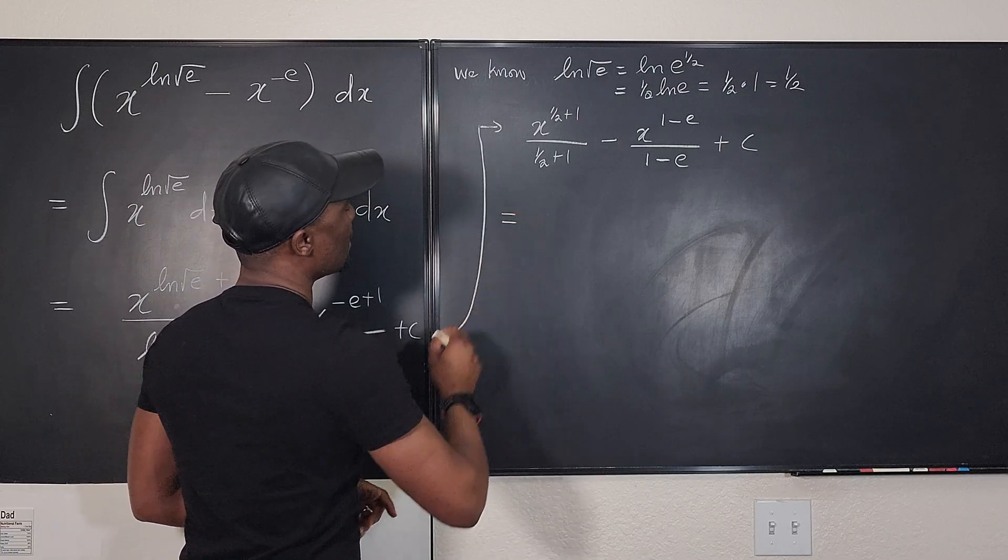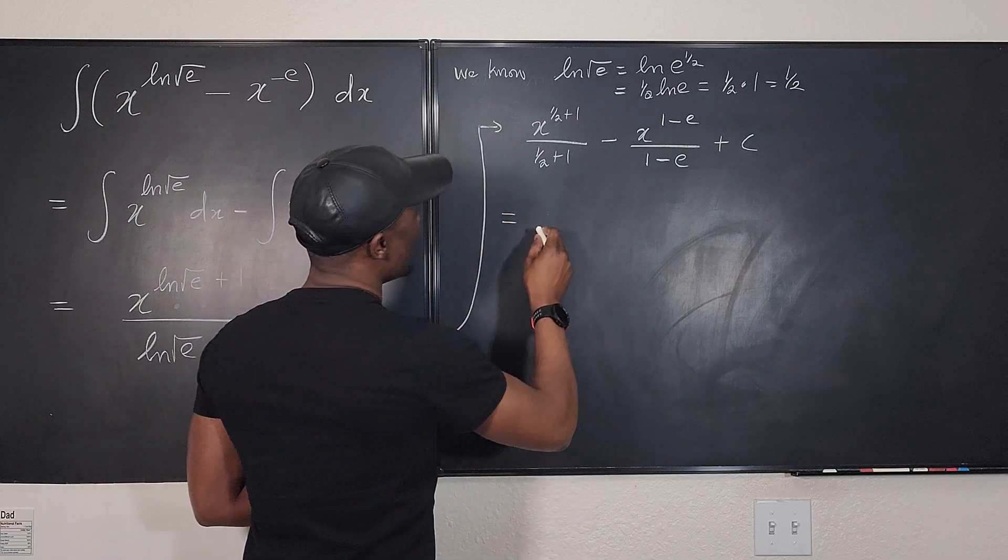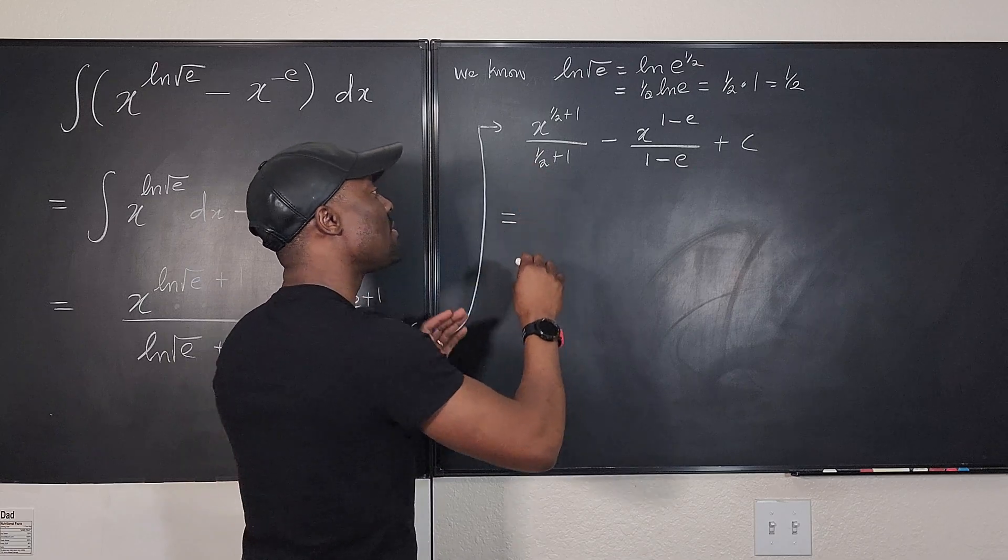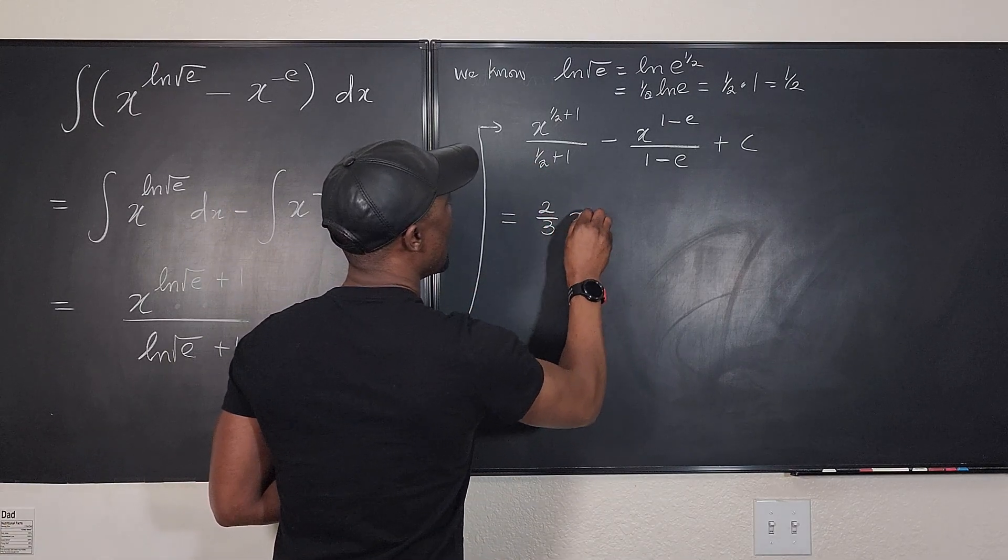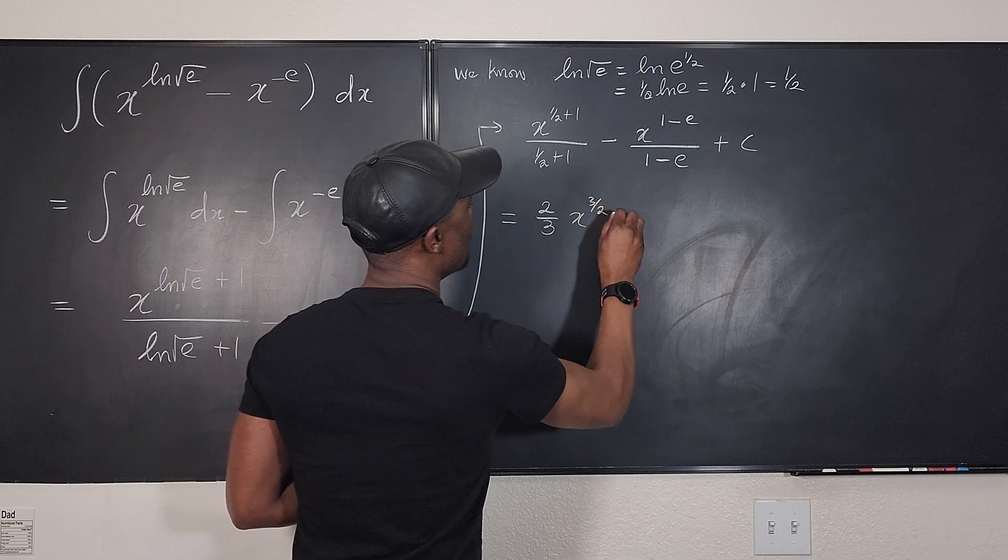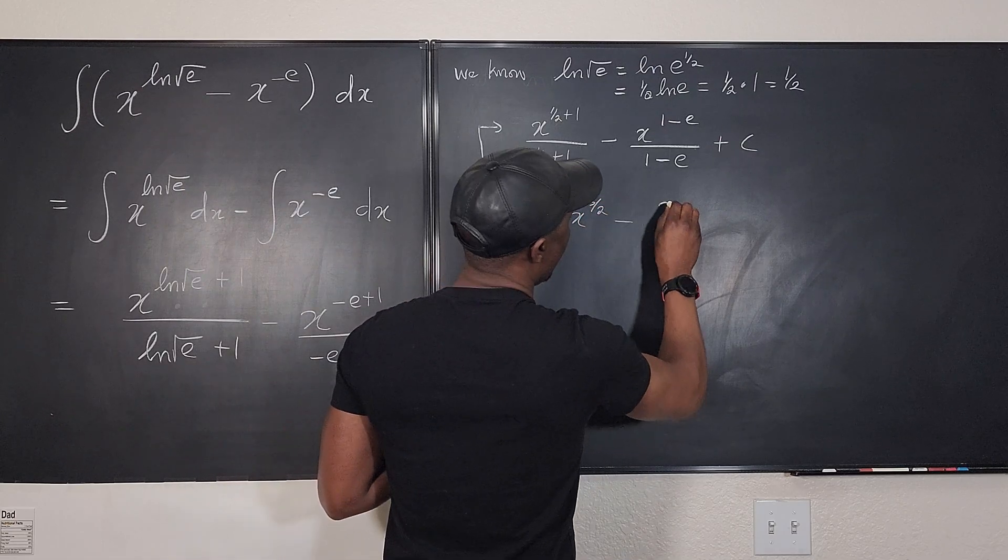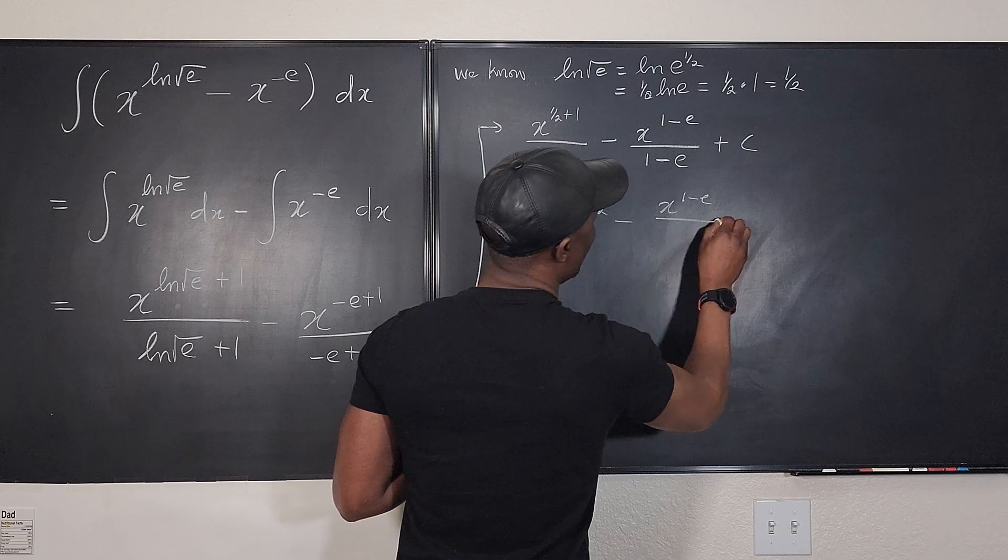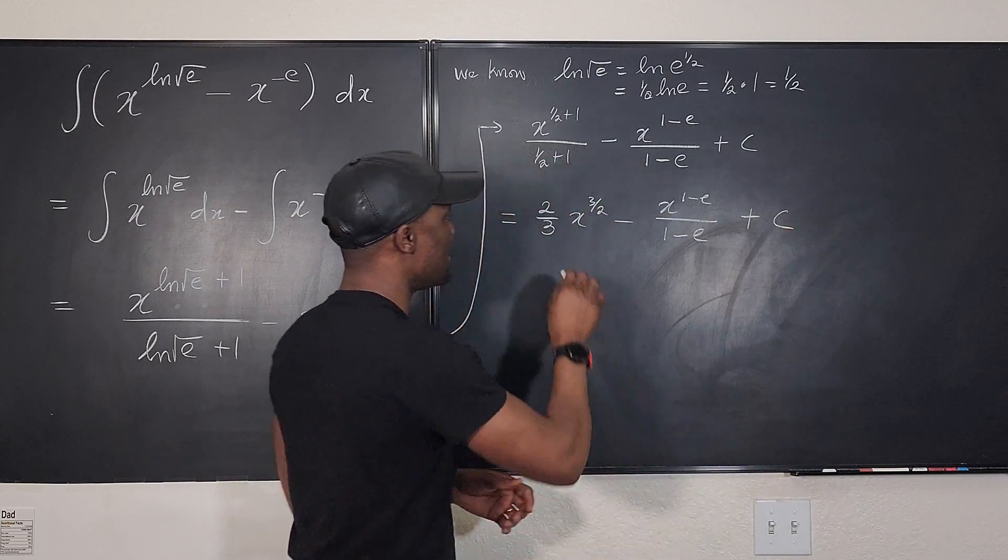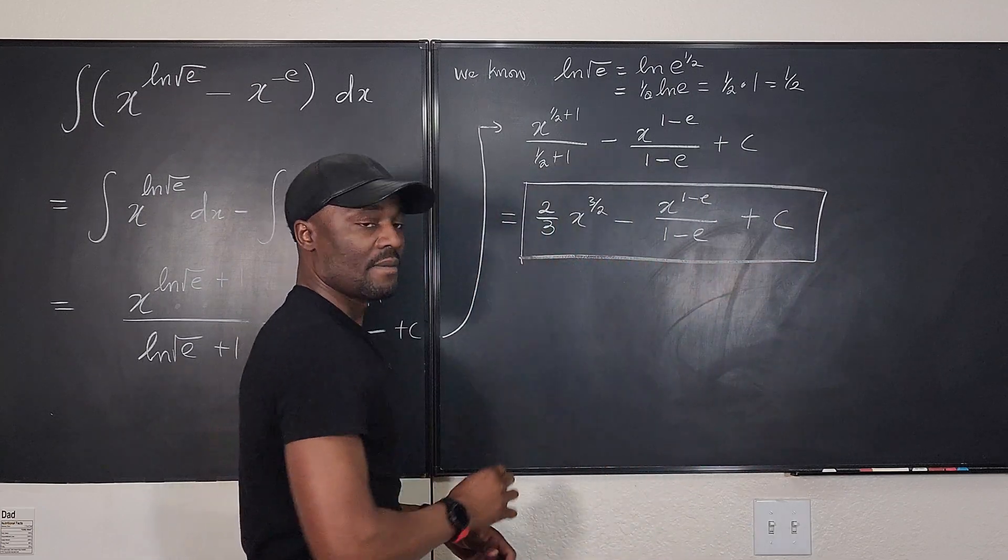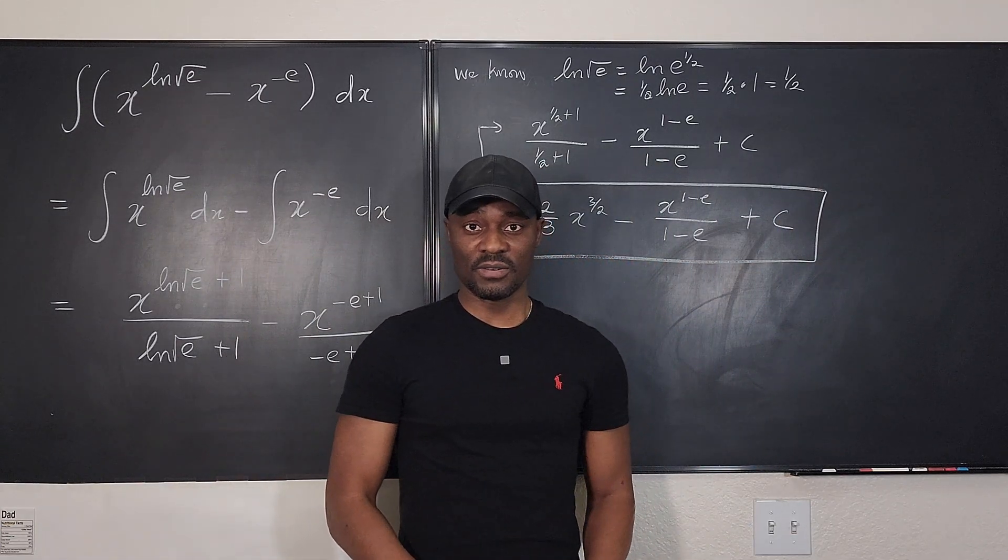This will be equal to, this is three halves. That's two thirds. That's two over three X raised to power three over two minus X to the one minus E over one minus E plus C. This is the integral.